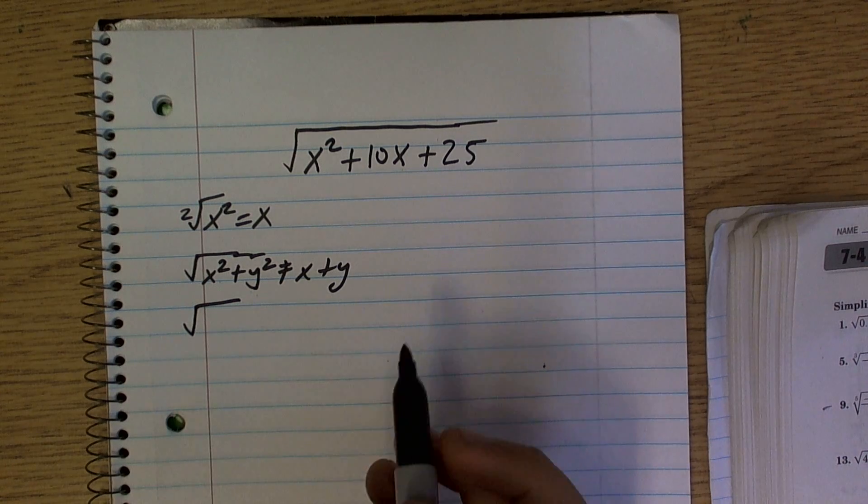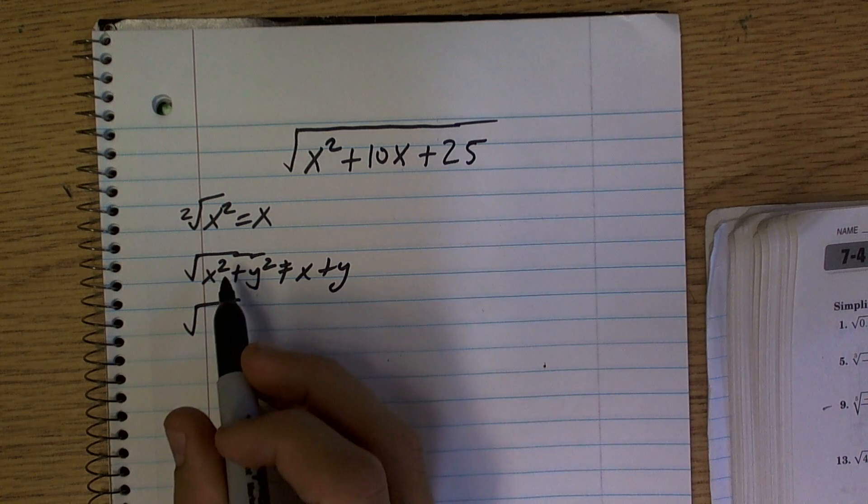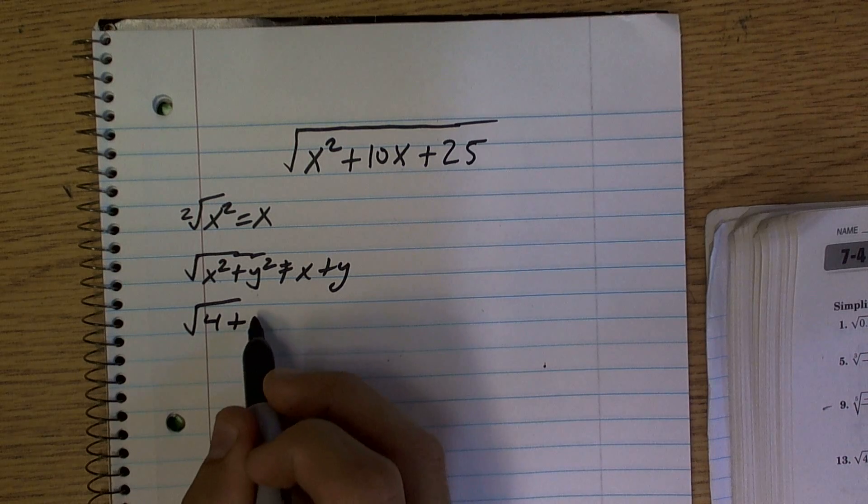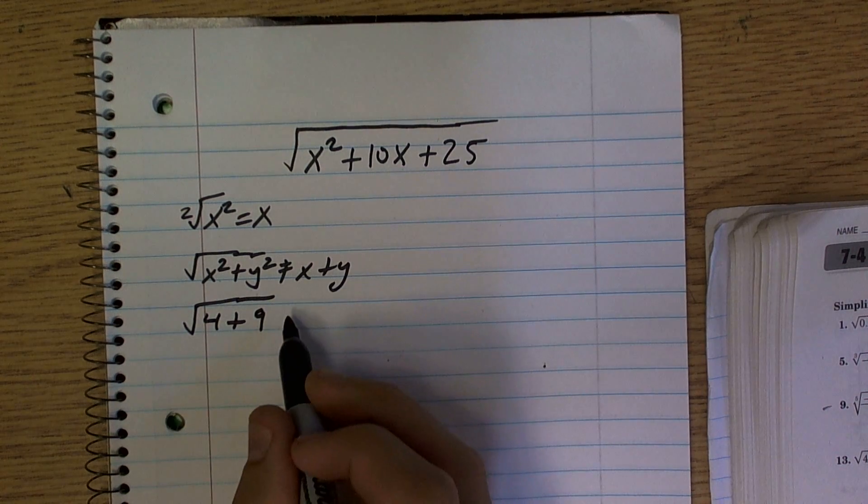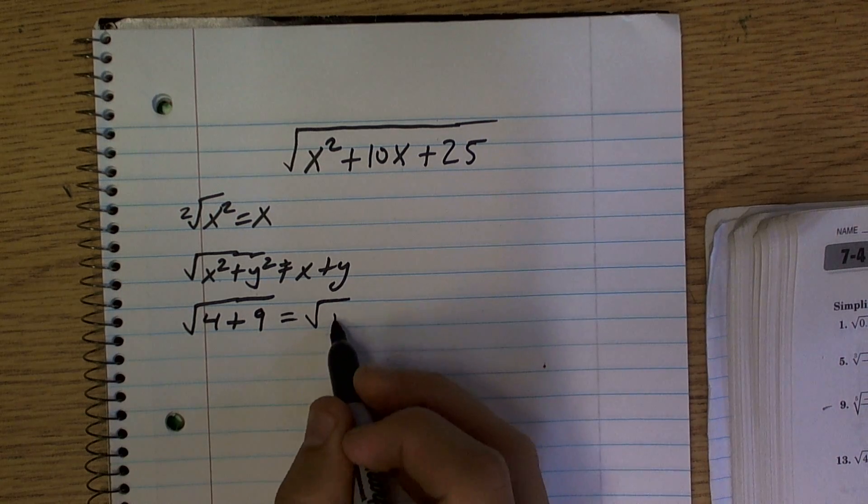Let's do the square root of, I don't know, what would be a square number - let's do 4 plus 9, okay? Well, the square root of 4 plus 9 is going to equal the square root of 13, right?